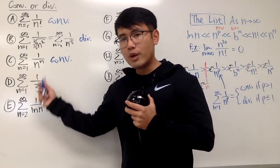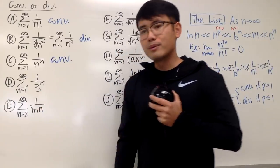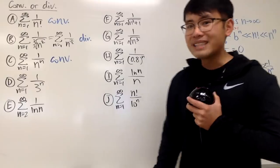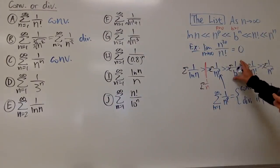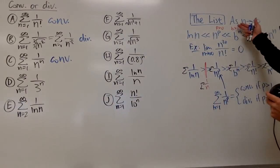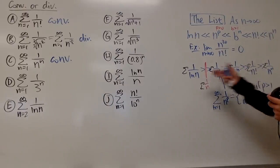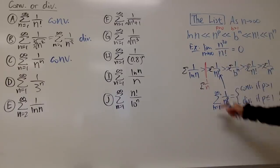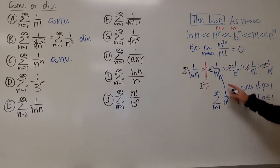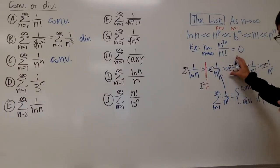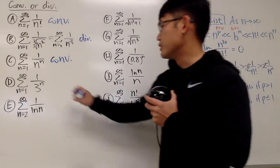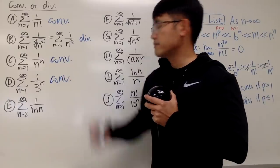The series from n=1 to infinity of 1 over 3^n: you can call this a geometric series, but we can also say it's on the list — as long as b > 1, which it is, this is smaller than 1/n^p for, say, p = 2. So this is less than the series for 1/n², and therefore also converges.